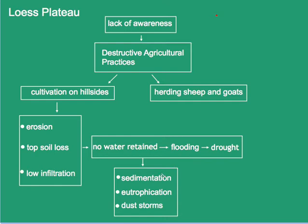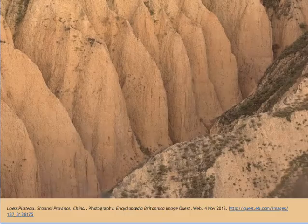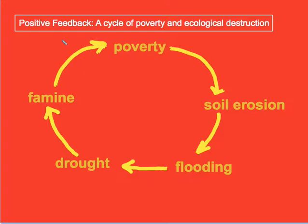Some other effects included sedimentation of the Yellow River, eutrophication, and dust storms, as the once productive plateau was transformed into barren desert. The depletion of the soil in the Loess Plateau provides an example of a positive feedback cycle of poverty and ecological destruction, showing how societies and the environment are inextricably interconnected.